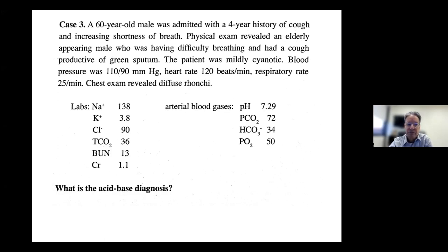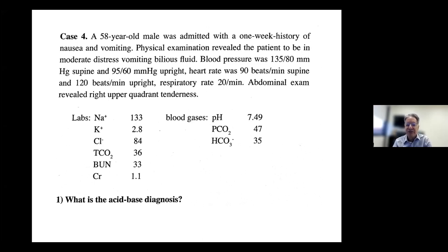Here's another case: a 58-year-old male admitted with a one-week history of nausea and vomiting in moderate distress, vomiting bilious fluid. Blood pressure was normal but decreased upright with postural hypotension, tachycardia, and right upper quadrant findings. The patient also has dysnatremia, hypokalemia, and likely pre-renal AKI from the vomiting. What is the acid-base diagnosis?